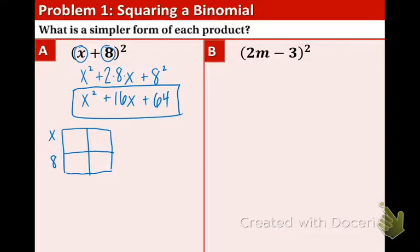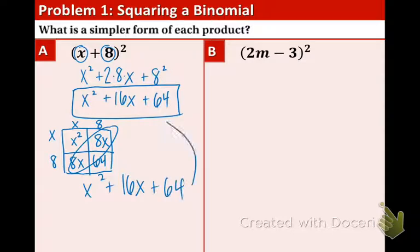Now I'll show you the table method. Since it's quantity squared, that means the dimensions of the box are the same on both sides. So x times x is x², x times 8 is 8x, 8 times x is 8x, and 8 times 8 is 64. Combine the values in the diagonal so we get x² + 16x + 64 and that's the exact same thing as above.